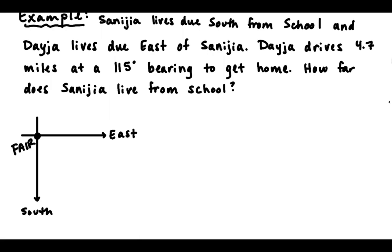Samajah lives due south, so starting at school I go due south to get to Samajah. And Deja lives east of Samajah, so here could be Deja. We've got a little triangle set up with school, Deja, and Samajah, and that's helpful because then we can use trig.